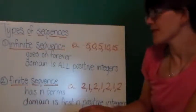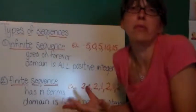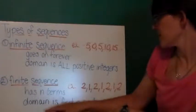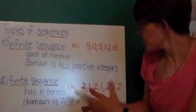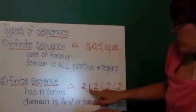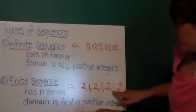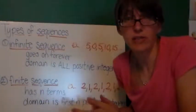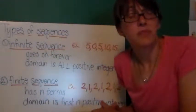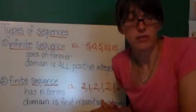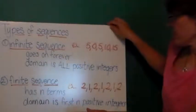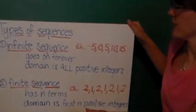A finite sequence has n number of terms. n could be really huge, but it still just has a certain number of terms. And the domain is the first n positive integers. So I've written a sequence here that has seven terms: two, one, two, one, two, one, two. I don't know what the rule would be for that sequence, but it's a sequence. It has an order. Start with two, then subtract one, then add one, then subtract one, then add one. You've got to stop after you've done this six times. So that's an infinite sequence and a finite sequence.